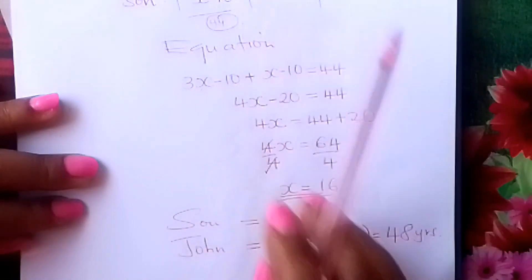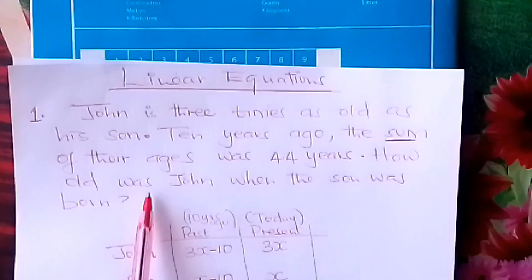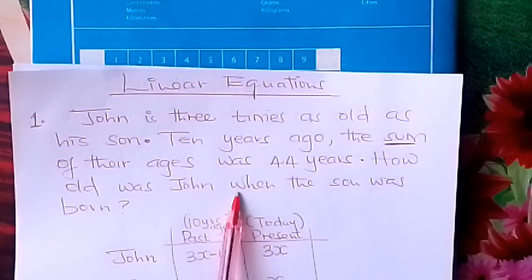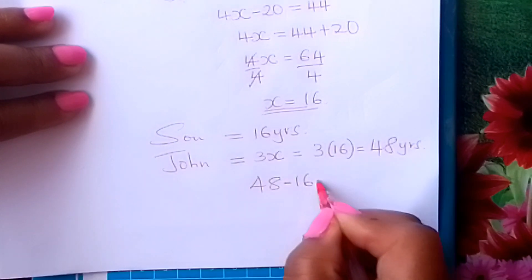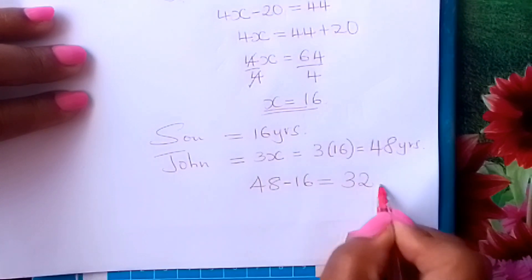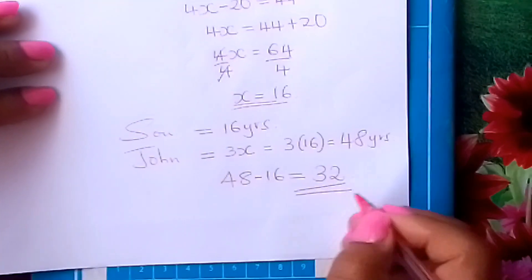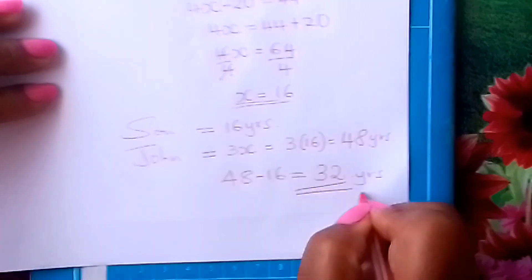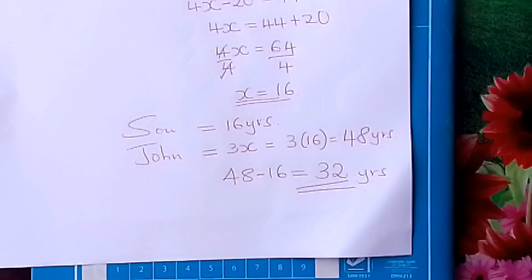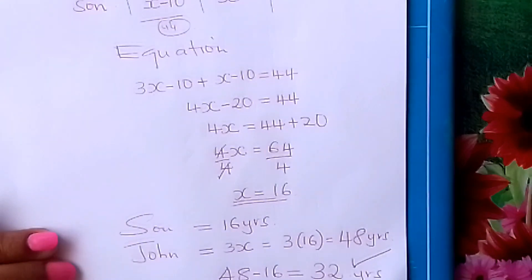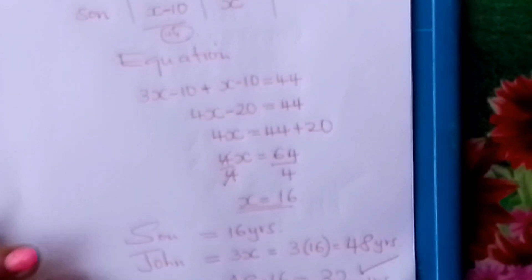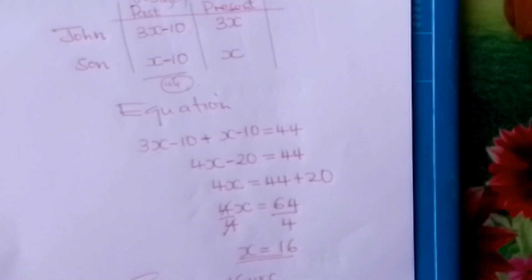The question asks: how old was John when his son was born? You simply subtract: 48 minus 16 gives us 32. So John was 32 years old when his son was born. Go and practice on such problems — we call them age problems. God bless you, thank you.